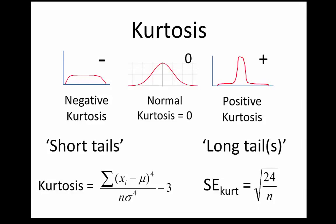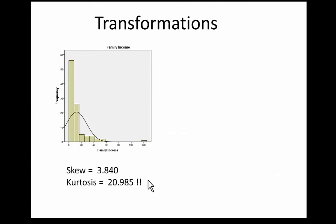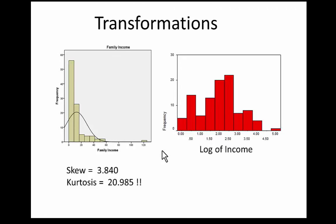For many statistical applications, it's desirable to have distributions that are normal or close to normal. A reasonable approach is to transform raw data to create measures distributed closer to normal. A variable like family income typically has positive skew — in the example shown here, the skew is 3.8 and the kurtosis is 20. A rule of thumb: if the skew is greater than 1 in either direction, or kurtosis is larger than positive 1, that warrants attention. A distribution with smooth positive skew might respond well to a log transformation — taking the natural log of income produces a distribution much closer to normal, with skew and kurtosis both much closer to zero.